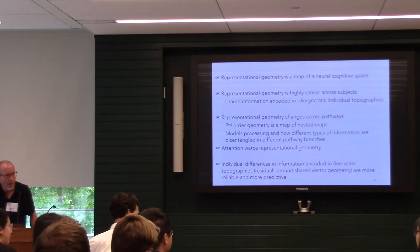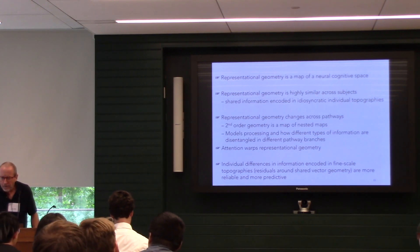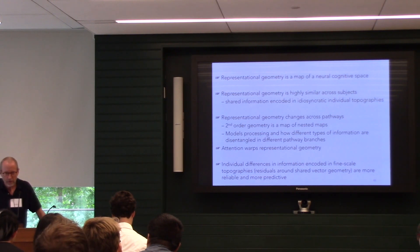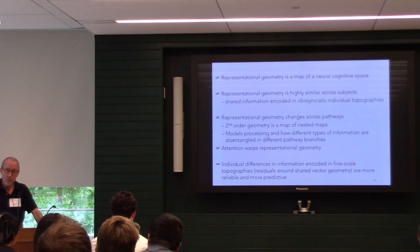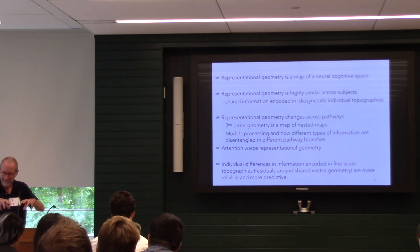Audience question about how the representational geometry changes relate to functional connectivity between brain areas. Response: We have a different view of connectivity — rather than thinking information is copied to the next area, we think it's processed. You can study connectivity as: are two things oscillating with each other? Or do they have representational geometries that are correlated but different? We think the second approach is more informative about what that connectivity is. And areas that have correlated geometries also show simple functional connectivity — so these are connected areas.